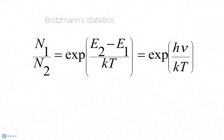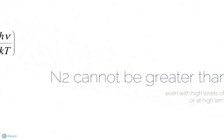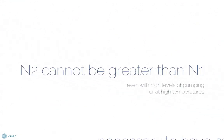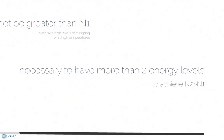By looking at Boltzmann's statistics for a two energy level system, it is not possible to achieve population inversion, even by dramatically increasing the temperature. The nature of the exponential term means that the ratio of N2 will not be greater than N1. Therefore, in order to achieve lasing, it is necessary to have a system where there are three or more energy levels.